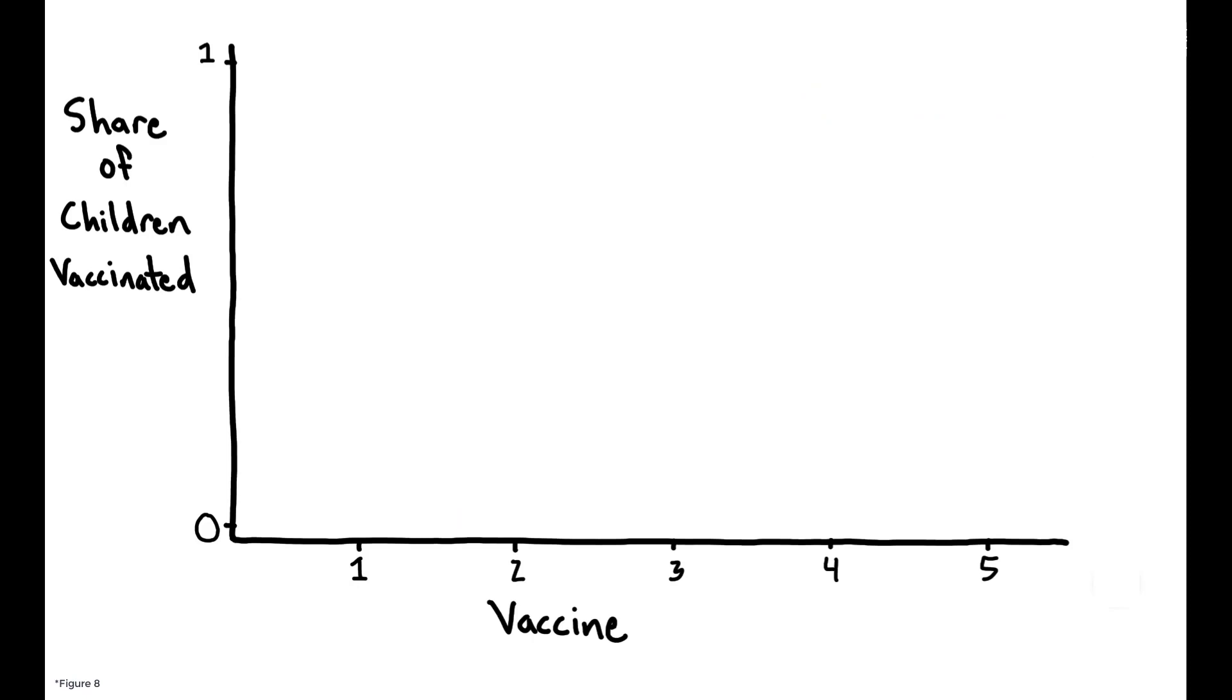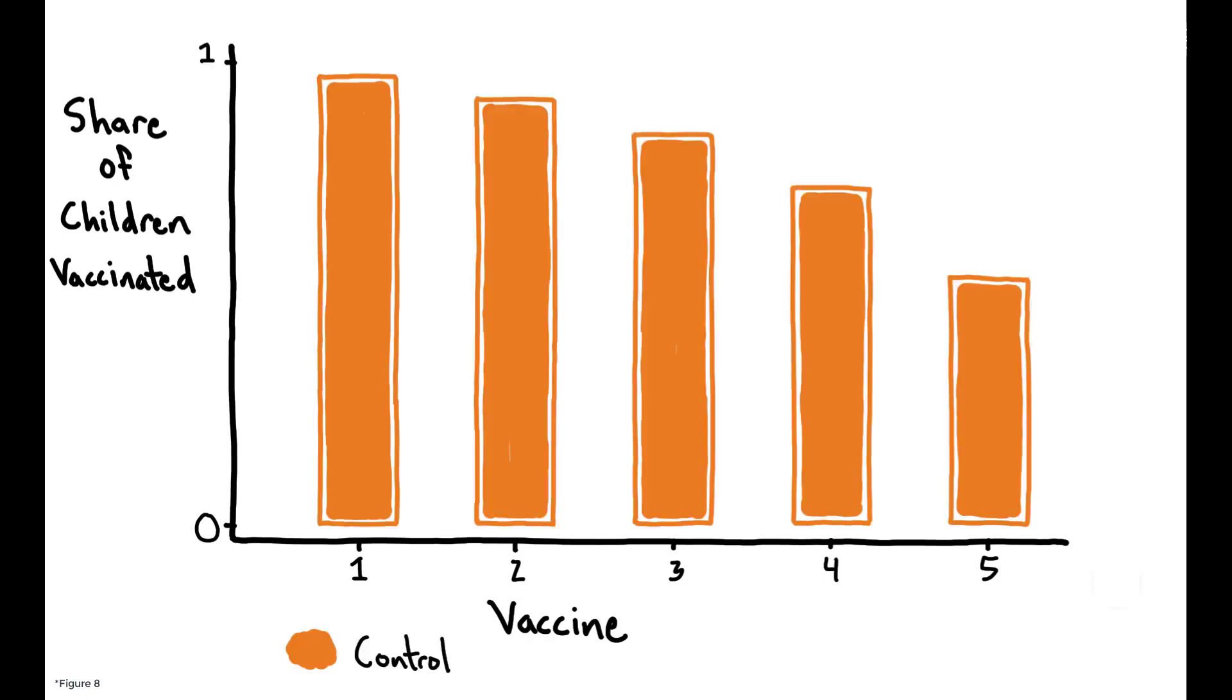The main results show that the signaling treatments led to a significant increase in the share of children that received the fourth and fifth vaccines. This figure shows the share of children in the control group who received each of the five vaccines.